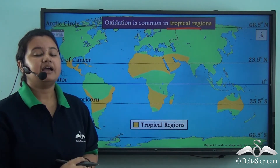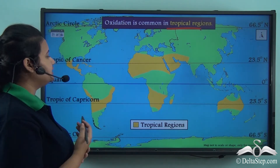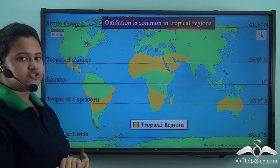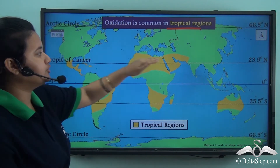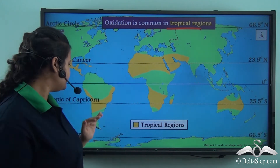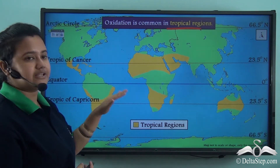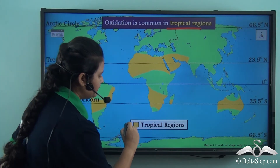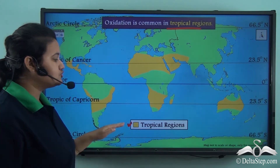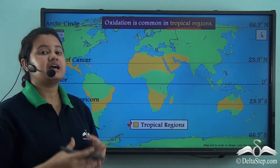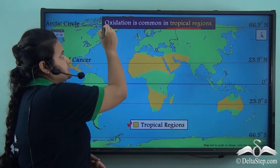This map shows the tropical regions of the world. The tropical regions are located across both tropics — the Tropic of Cancer in the Northern Hemisphere and the Tropic of Capricorn in the Southern Hemisphere. The regions marked in yellow represent the tropical regions of the world, and the rocks present in these tropical regions are subjected to oxidation.